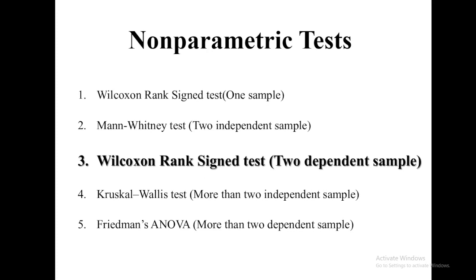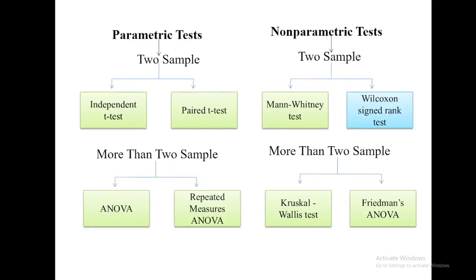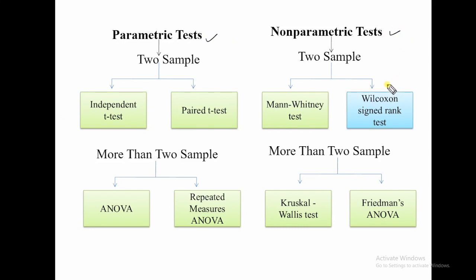The Wilcoxon signed rank test is a non-parametric test. There are two types of tests: parametric and non-parametric. The Wilcoxon signed rank test is equivalent to the paired t-test.